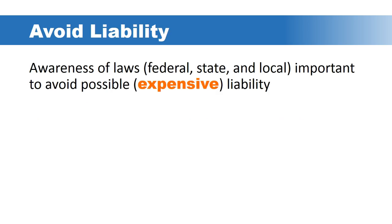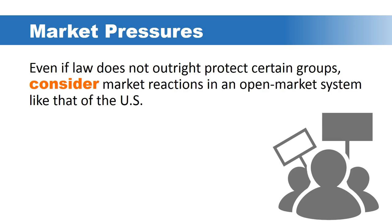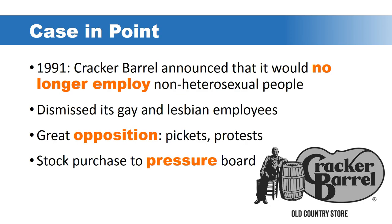From a liability perspective, it's important to be aware of laws — whether federal, state, or local — in order to avoid possible expensive liability. Even if the law does not outright protect certain groups, it's important to consider how the market can react, particularly because we have an open market system in the United States. Let's consider a case where a company exercised its right to take a position and how the market reacted.